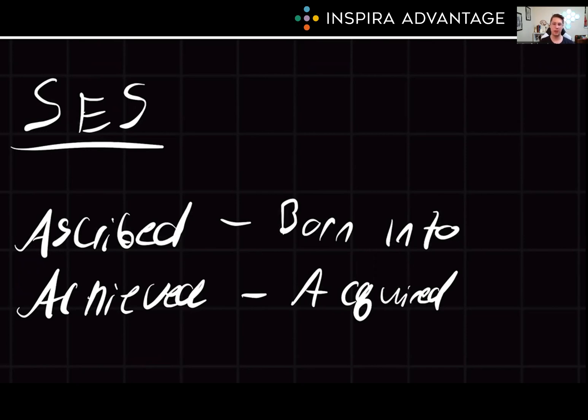The other status you need to know is called achieved status. This is acquired through direct individual efforts. For example, a person who works hard to become a successful lawyer attains a higher social status due to their achievements. So you can think of ascribed as you were born into it and achieved are the things that you have achieved, like hopefully crushing the MCAT and becoming a doctor.